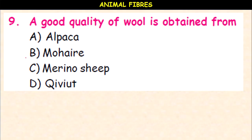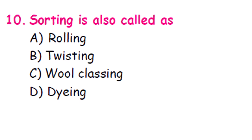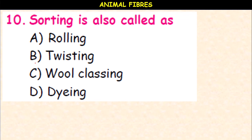A good quality of wool is obtained from alpaca, mohair, merino sheep, or qiviut? It is merino sheep — famous for good quality wool. Sorting is also called rolling, twisting, wool classing, or dyeing? Sorting is nothing but wool classing.